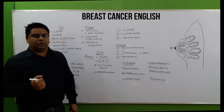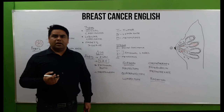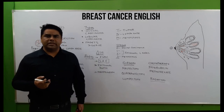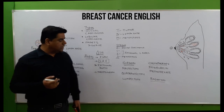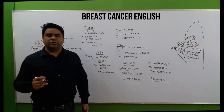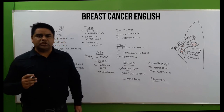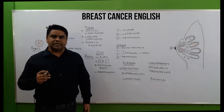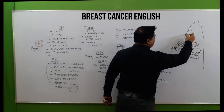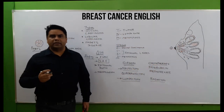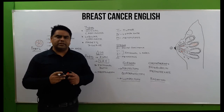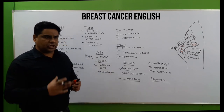Treatment options for breast cancer begin with surgery. Mastectomy is the complete removal of the breast, done to prevent complications. Lumpectomy involves removal of only a small portion of the breast — the tumor is excised and lymph node dissection is performed.